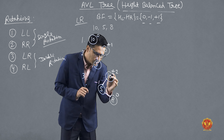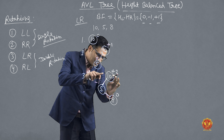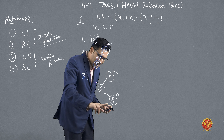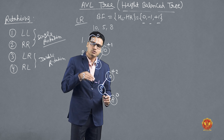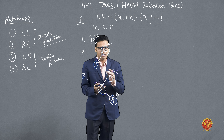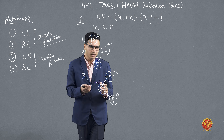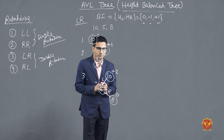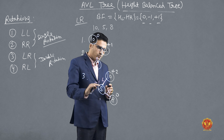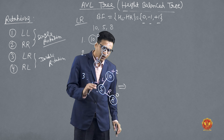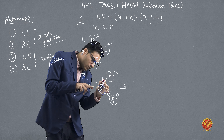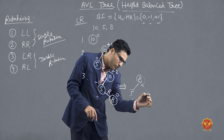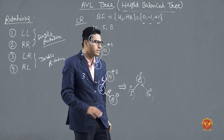To balance it, we first identify which rotation to apply. Node 10 became unbalanced because of inserting 8. To reach node 8, from the root we take one left and one right. The node we reach — 8 — becomes the new parent. So 8 becomes the root, 5 becomes its left child, and 10 becomes its right child. Now checking balance factors: the tree is perfectly balanced.